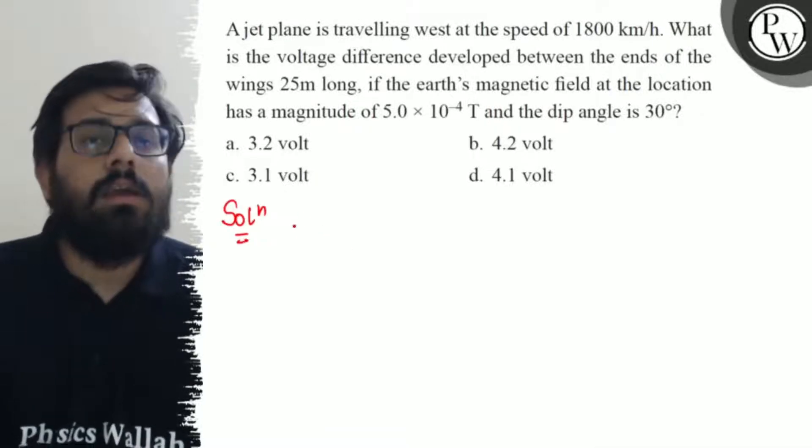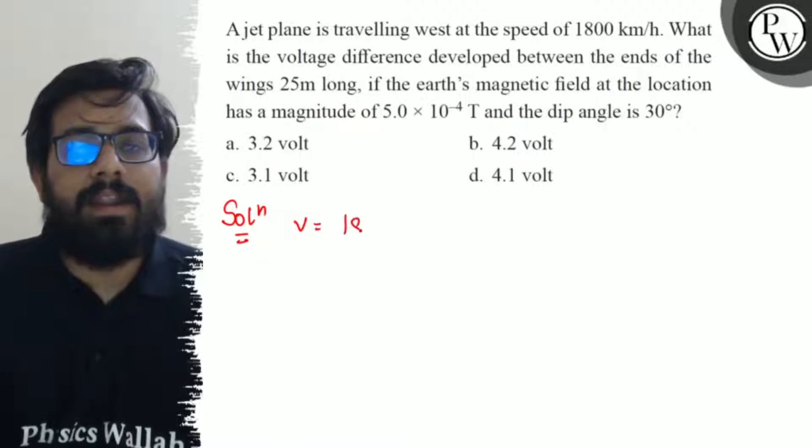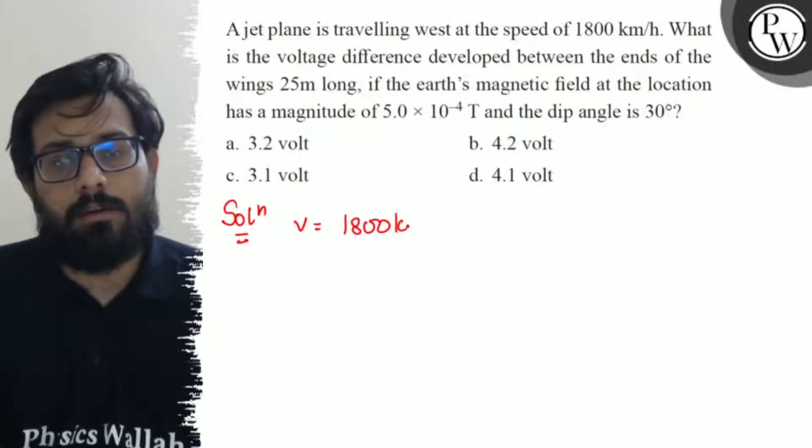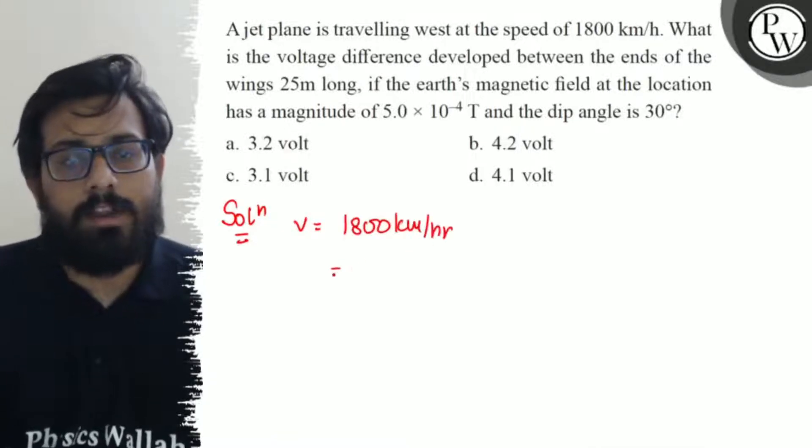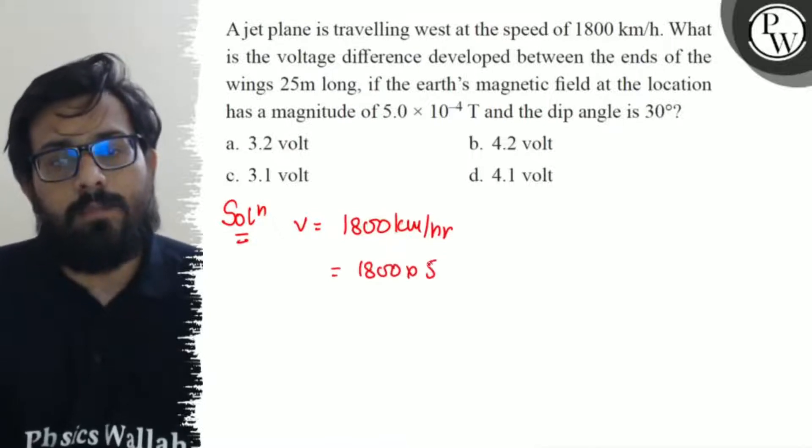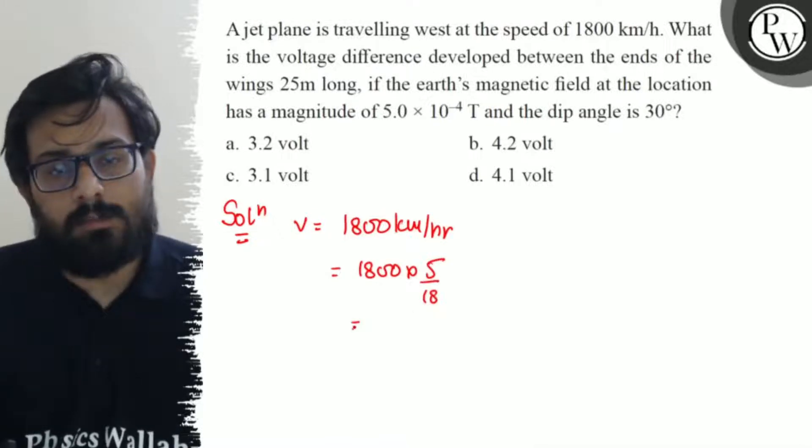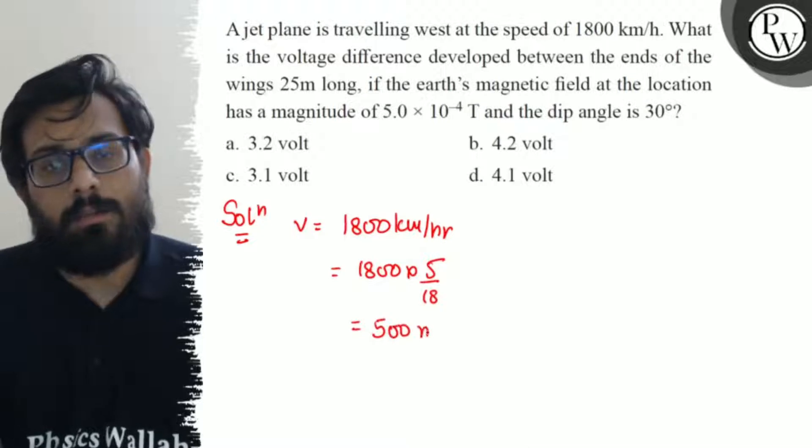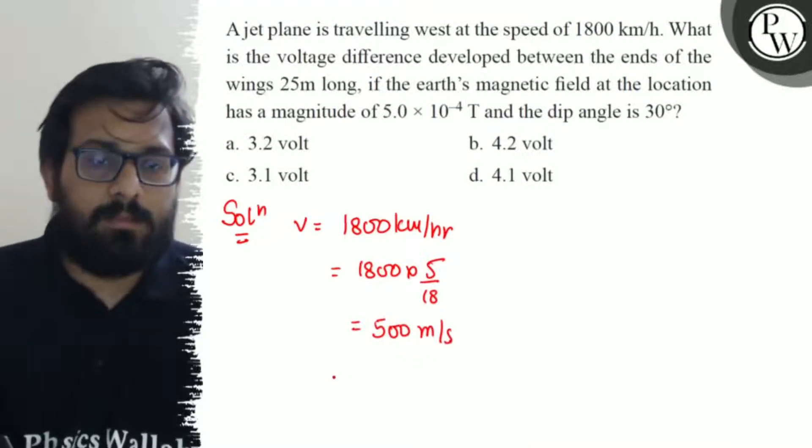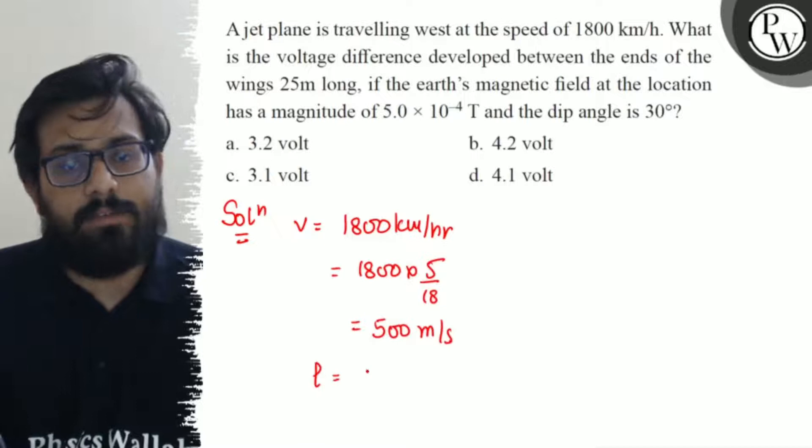What are the given data? Plane speed we know 1800 km per hour. If we convert to meters per second, 1800 into 5 by 18, this comes to 500 meter per second. The length of the wing is given as 25 meter.